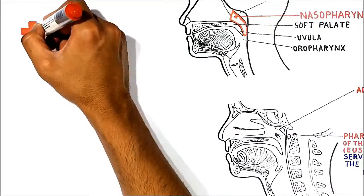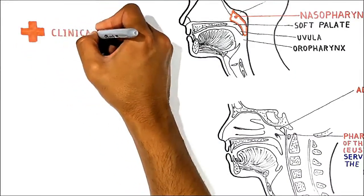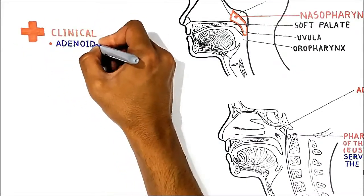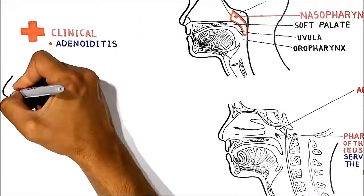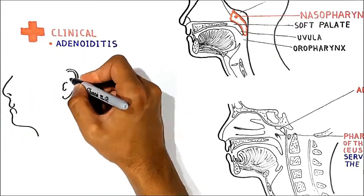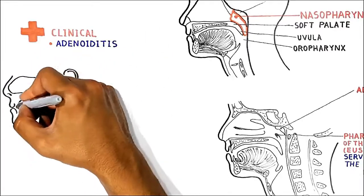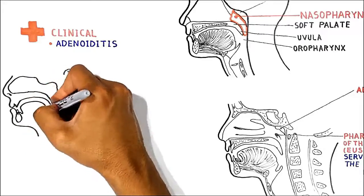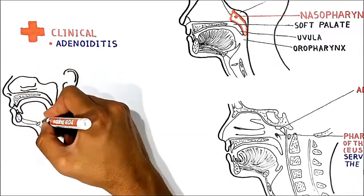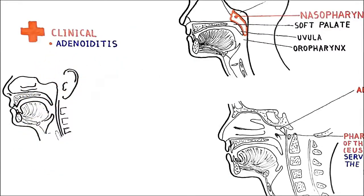In clinical practice, sometimes the adenoids may inflame, causing adenoiditis. Adenoiditis can be caused by a bacterial infection, such as infection with Streptococcus. It can also be caused by a number of viruses including Epstein-Barr virus, adenovirus, and rhinovirus.